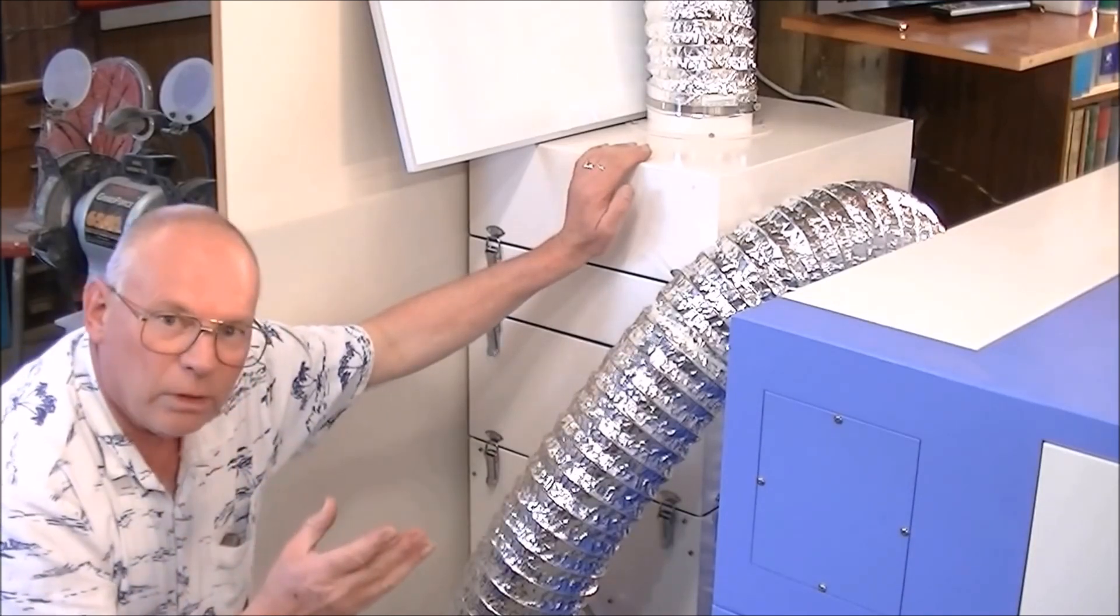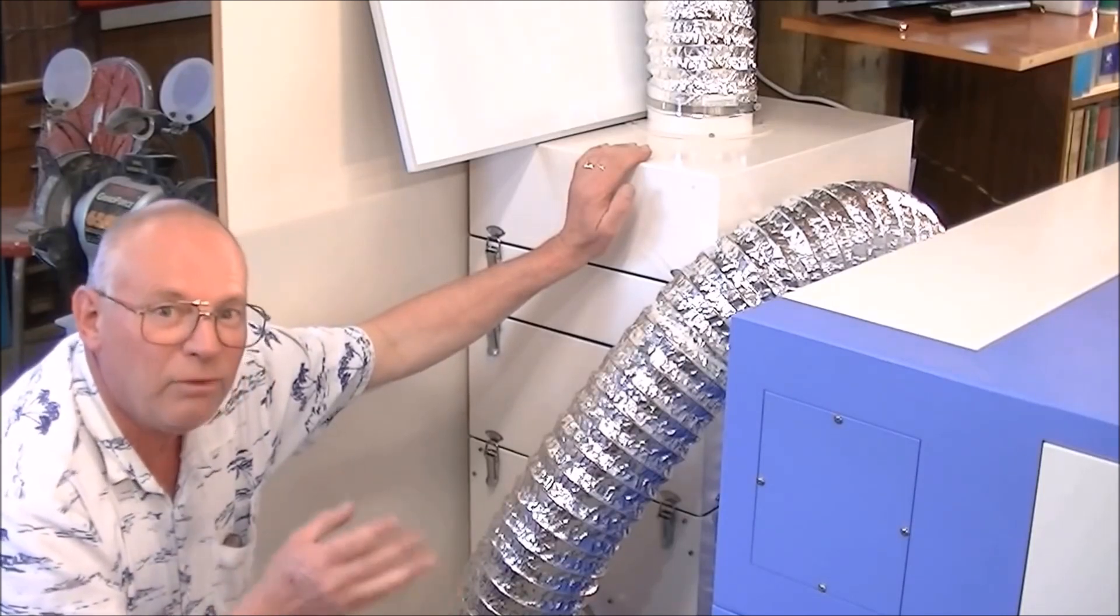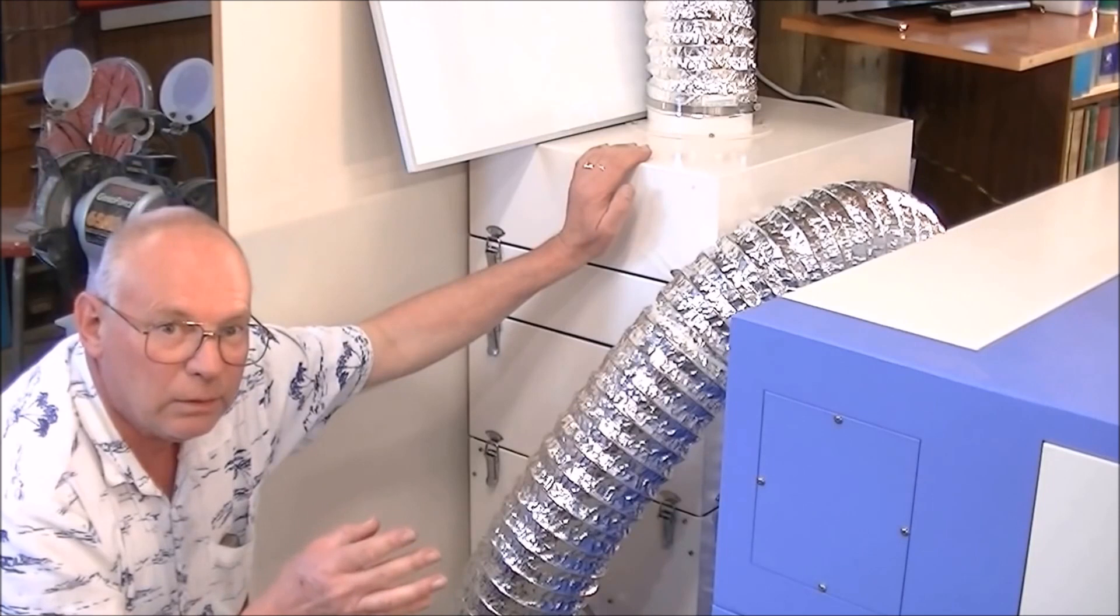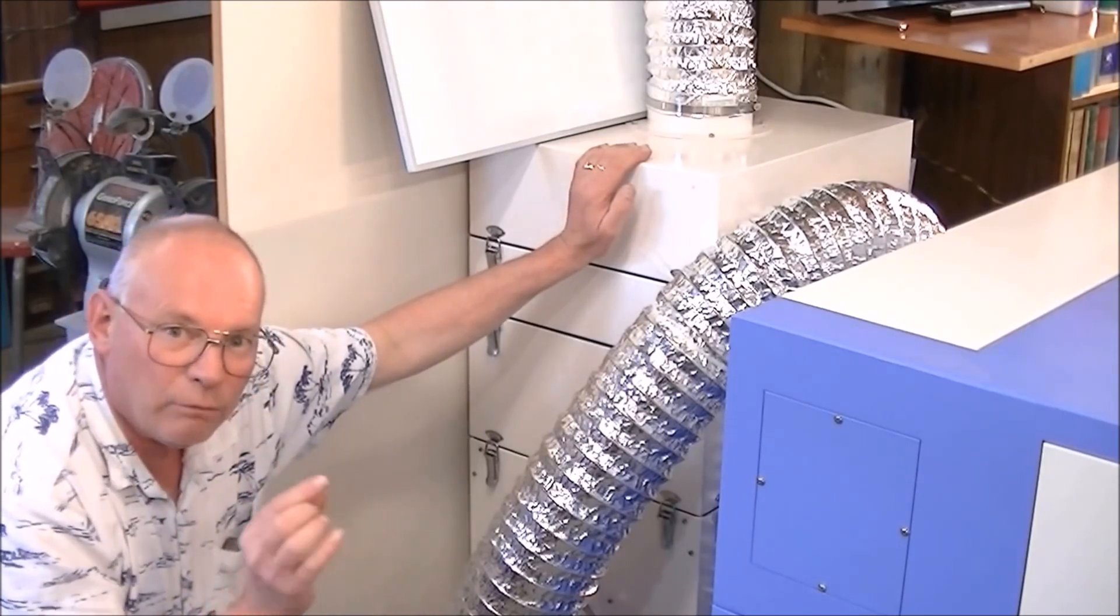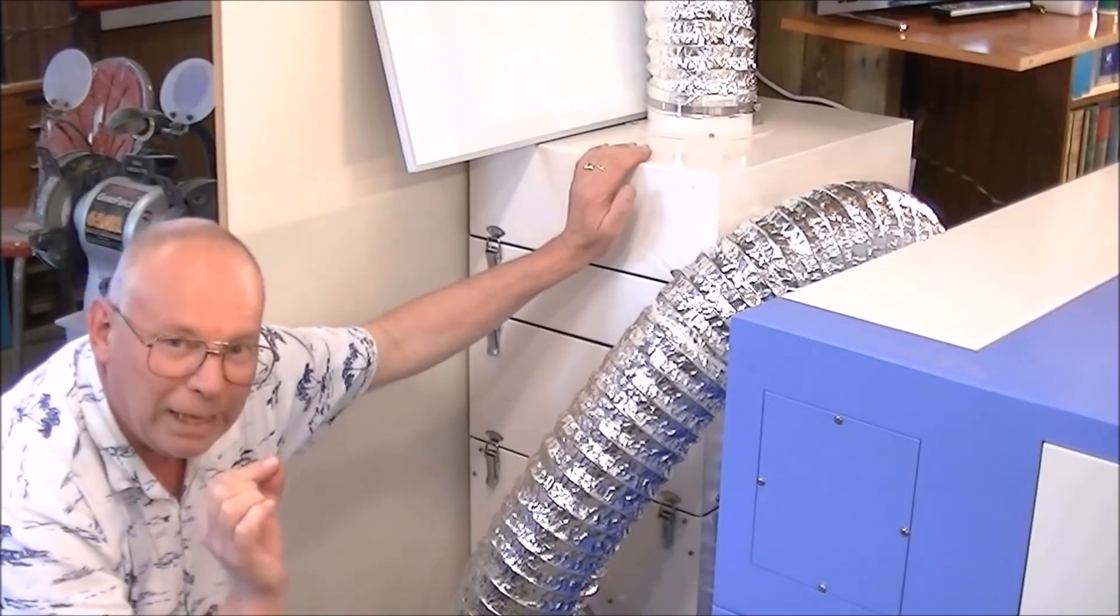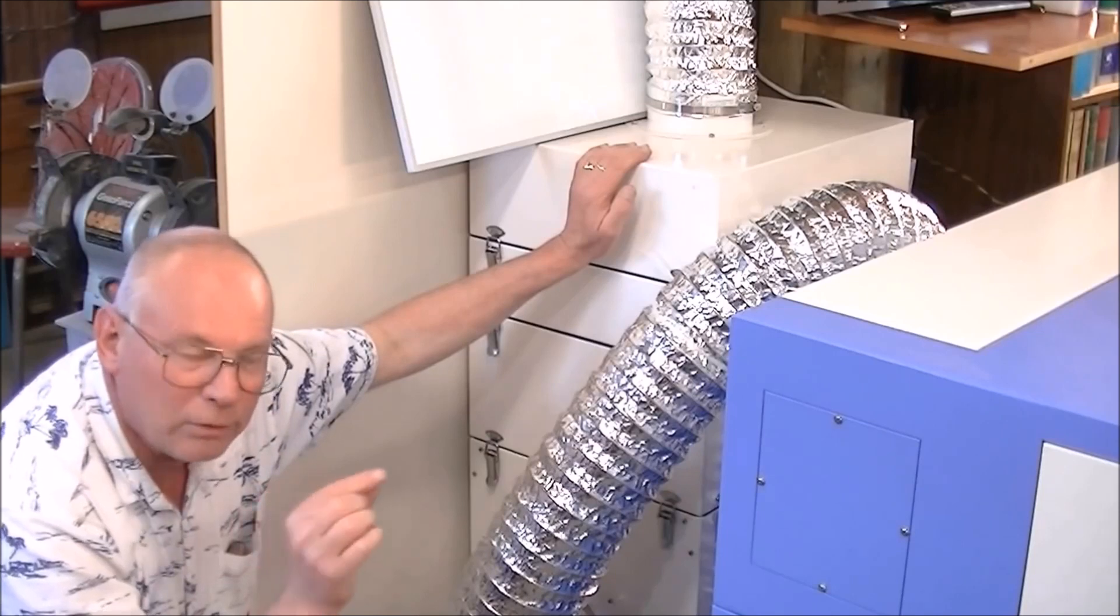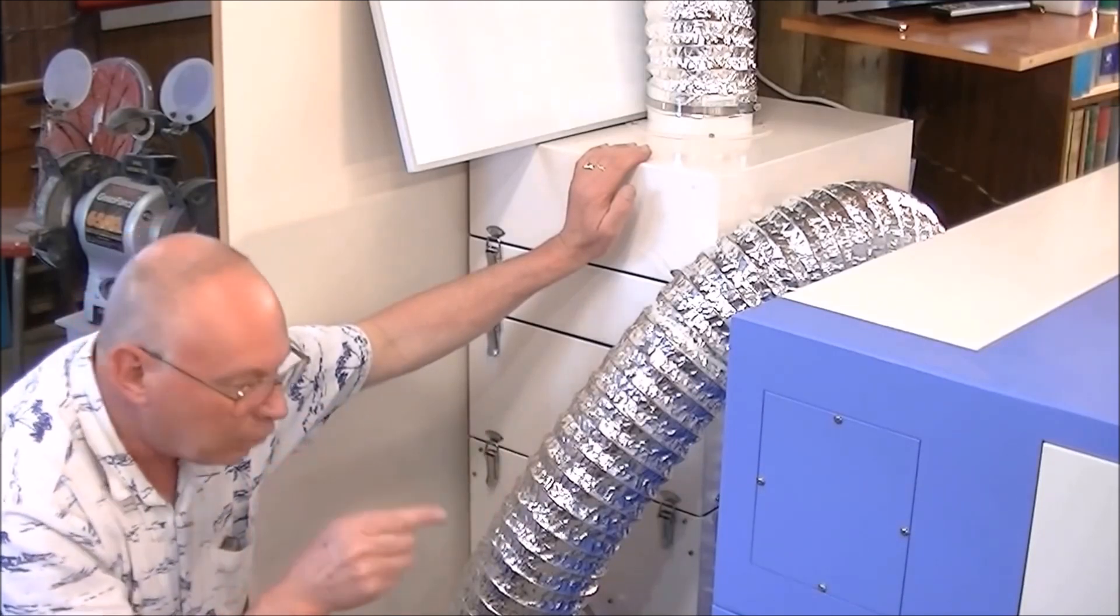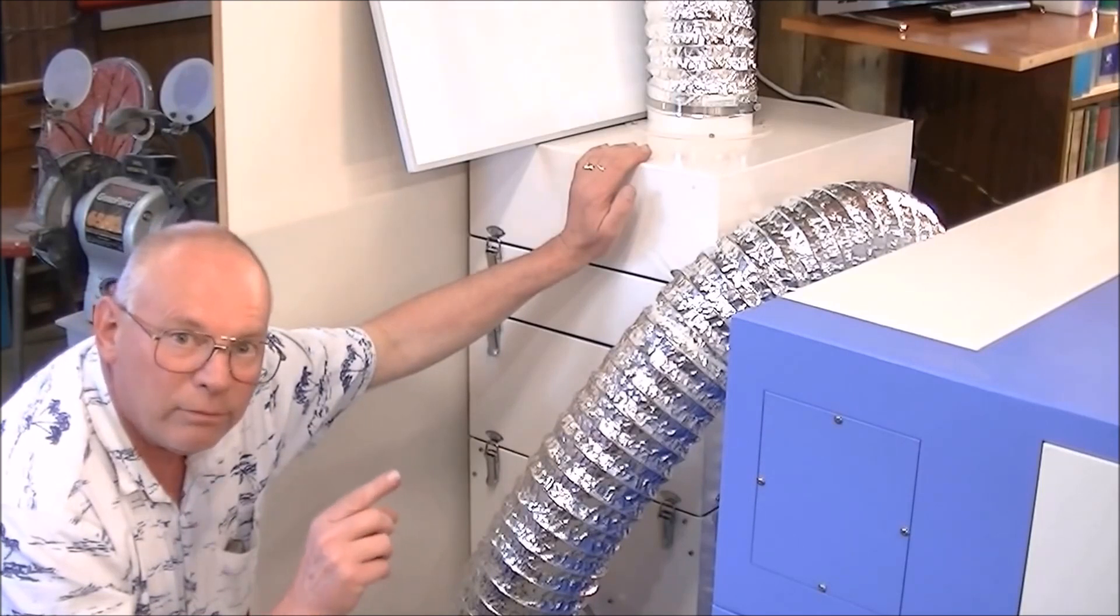A laser operates at upwards of 5,000 degrees C. That is the temperature of the actual pinpoint or hair of light that comes out of the end of that nozzle to cut or etch or engrave material. It evaporates the material that it comes into contact with.